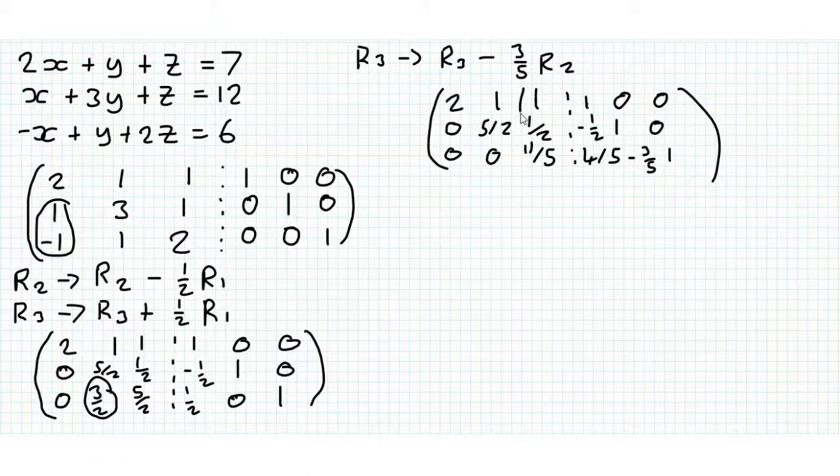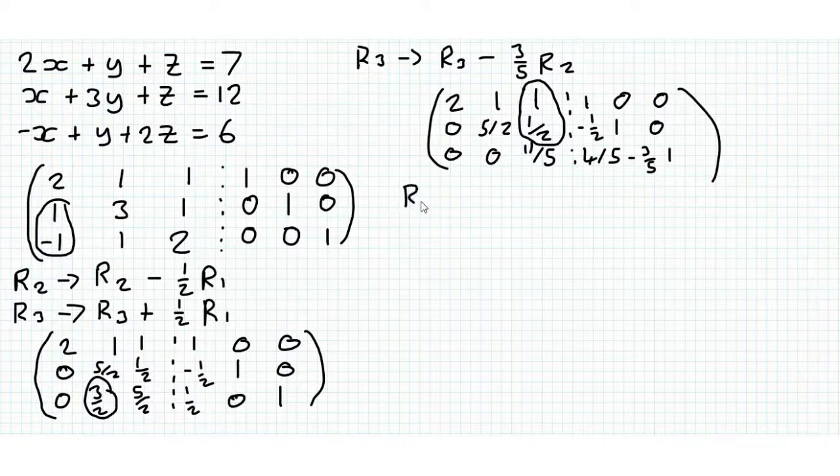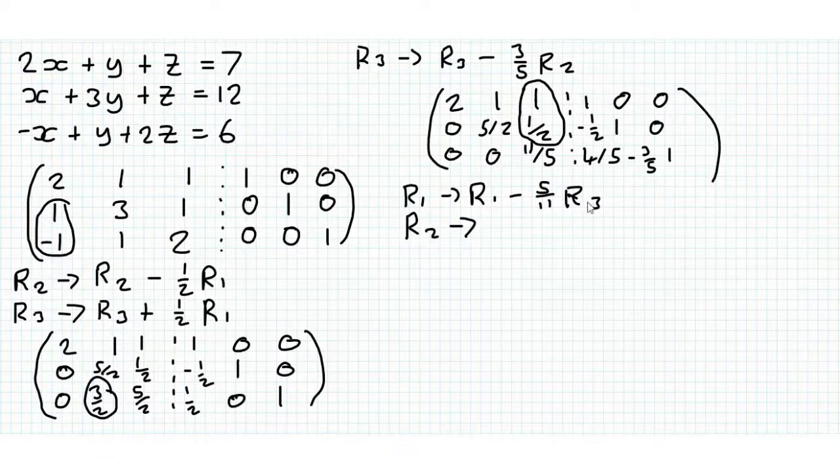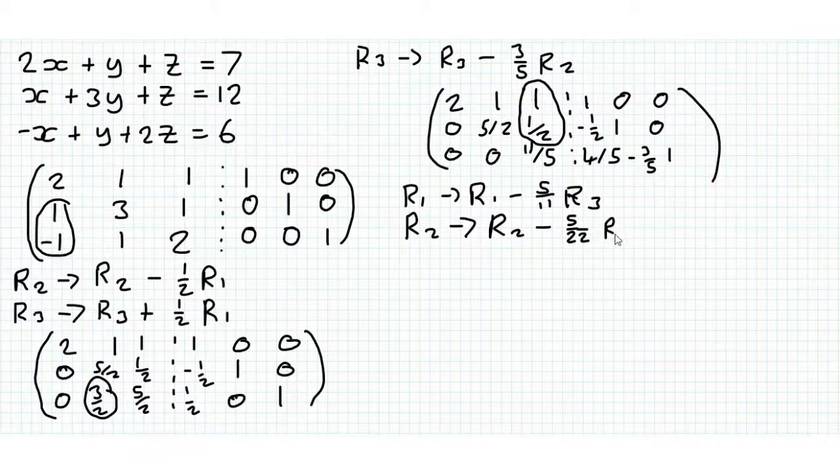Now we want to get these two as zeros, so the operation we're going to do is we're going to use row 3. Row 1 goes to row 1 minus 5/11 row 3. This method might seem long, but the benefit of this is it goes on like it's the same thing every time you go in the same order. You just have to change the coefficients of what you're subtracting depending on the numbers in the problem. For 3 by 3 it takes about the same amount of time as finding the inverse in the classic way, but for 4 by 4 in higher dimensions it's much quicker.